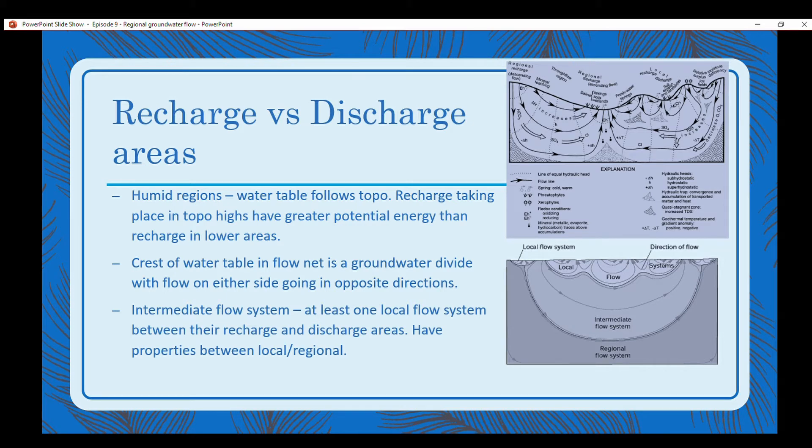There's three types: regional flow systems, intermediate, and then local. An intermediate flow system has at least one local flow system between their recharge and discharge areas. It has properties between local and regional. It's basically intermediate, between what a local flow system is and what a regional flow system is.